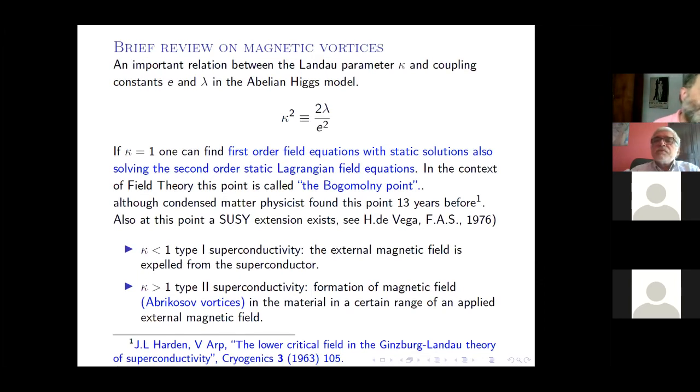In the superconductivity context, kappa smaller than one is Type I superconductivity. That is, the external magnetic field is expelled from the superconductor. And kappa larger than one is Type II superconductivity, that is, formation of magnetic field Abrikosov vortices in a certain range, of course, of the applied magnetic field.